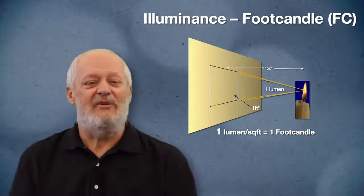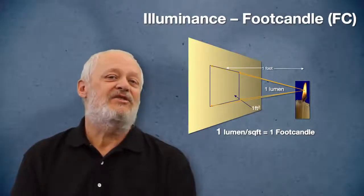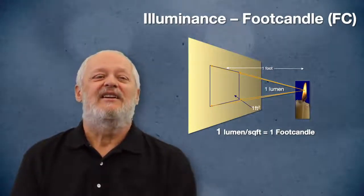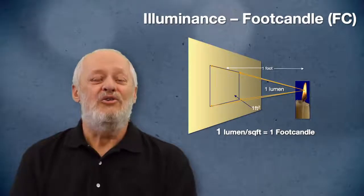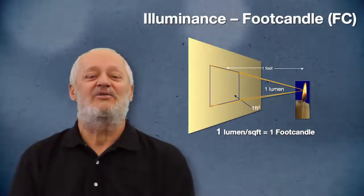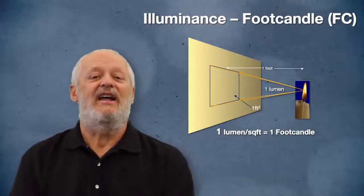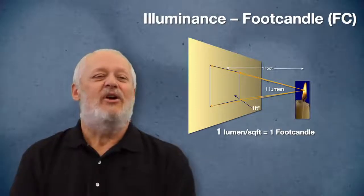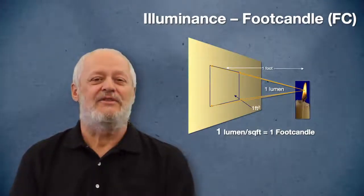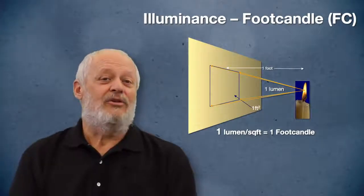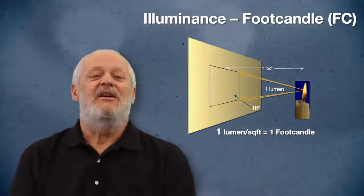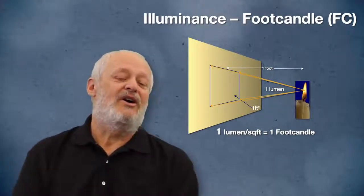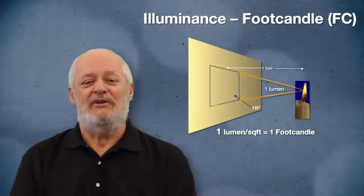If we take our same candle and mount it about a foot away from a flat surface, then measure out a square foot on that surface, that surface will be illuminated to 1 lumen per square foot — there will be 1 lumen landing on each square foot of area. That is how we define a foot candle. This is what we call incident light — light shining onto surfaces, which can be vertical as shown in the illustration, but more often is a horizontal surface like a desktop or the floor. Lumens per square foot equals foot candles.